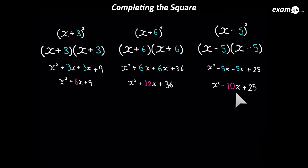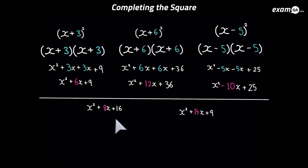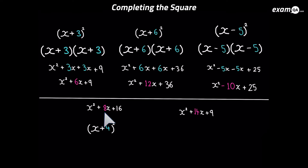Now this pattern is very important for this topic. Let's have a go at doing it backwards — I've got the expanded version and I'd like to factorize it into the squared brackets form. What's going to be inside the squared brackets is half the number in front of x. So it's going to be x plus four, all squared. If you expand this, you'd get x squared plus 4x plus 4x, which makes 8x, and also plus 16 from four times four.